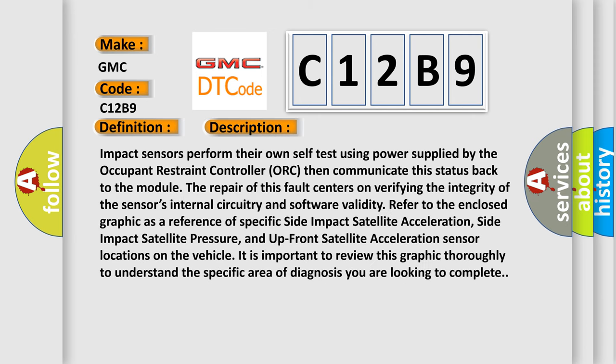Impact sensors perform their own self-test using power supplied by the Occupant Restraint Controller (ORC), then communicate this status back to the module. The repair of this fault centers on verifying the integrity of the sensor's internal circuitry and software validity. Refer to the enclosed graphic as a reference of specific side impact satellite acceleration, side impact satellite pressure, and up-front satellite acceleration sensor locations on the vehicle. It is important to review this graphic thoroughly to understand the specific area of diagnosis you are looking to complete.